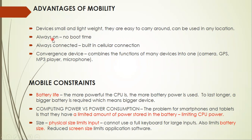Mobile devices are always on. If you look at your smartphone, it is always on — there is no boot time. Your screen may be off, but your apps are working in the background. It is always connected, meaning it has a built-in cellular connection so you are able to connect to the internet. It is also a convergence device because it combines the functions of many devices into one.